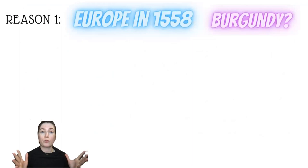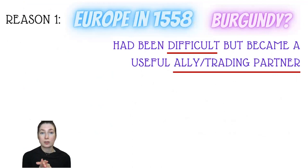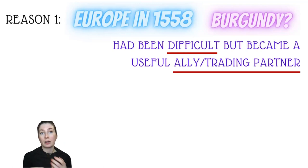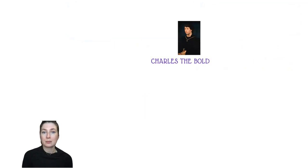I'm going to go through the first reason in this video, and that relates to something that happens in Burgundy. To understand it, you have to understand the history and legacy of Burgundy as a place — this will also help with revision covering Henry VII and Henry VIII. Burgundy was originally difficult at the start of the Tudor period, but by the end of Henry VII's rule it became a very useful ally and trading partner, particularly aiding England against France. However, the reason Elizabeth was vulnerable is that by the point of her reign, Burgundy didn't even exist anymore, and was controlled by Philip of Spain — so she had lost Burgundy as an ally.